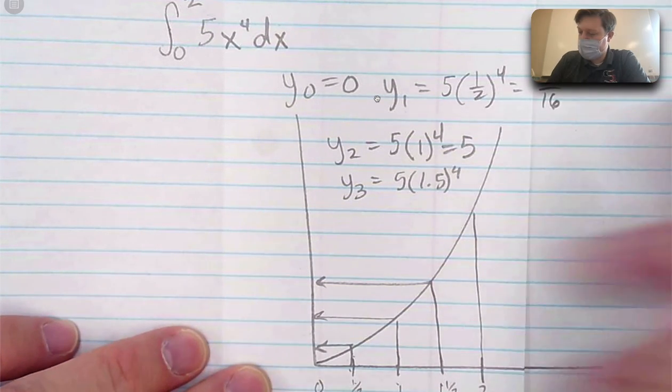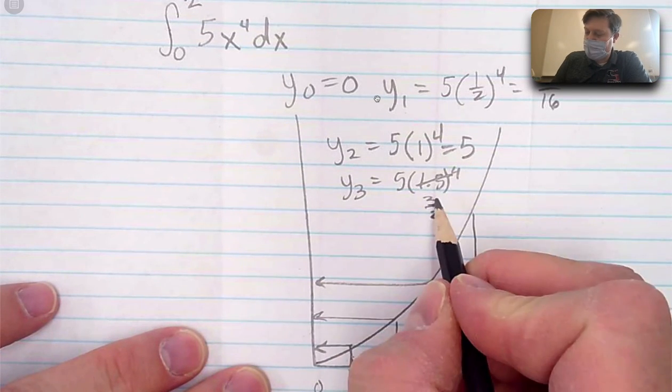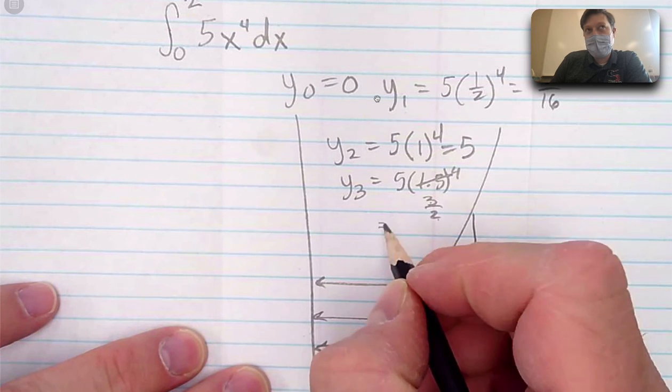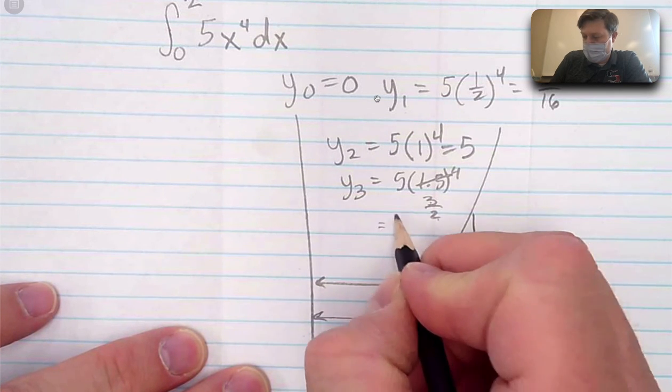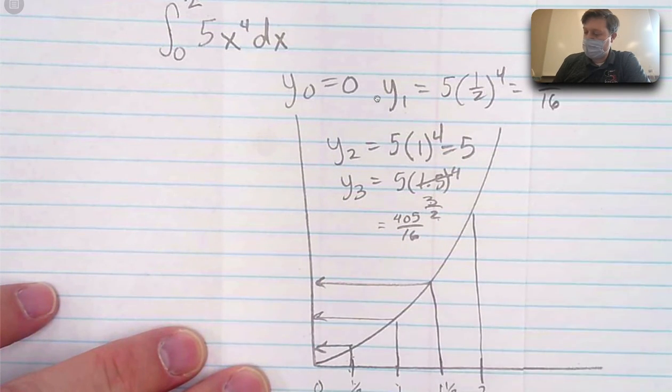If you know 1.5 times 1.5. Oh, another way to write that would be 3 over 2. That way I could have 5 times 81 divided by 16. 5 times 81 is 405 divided by 16. And then have the 4th number. So 0, 1, 2, 3, 4.